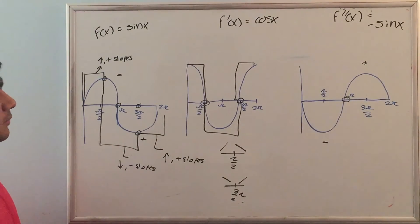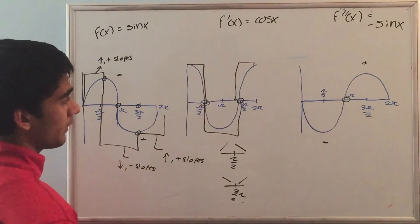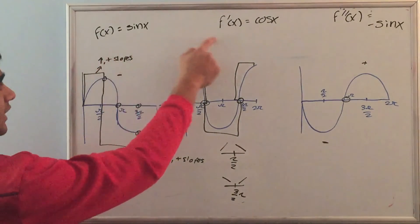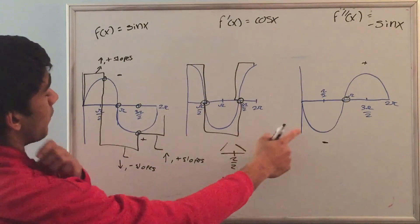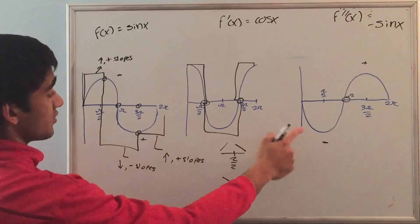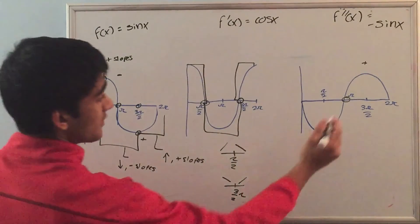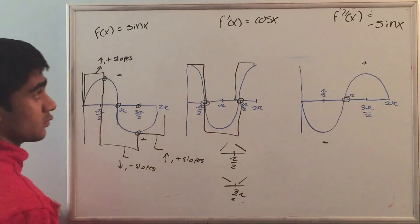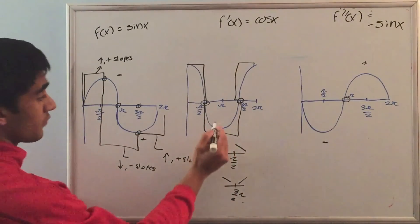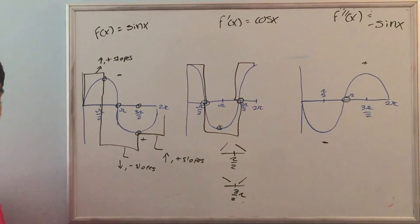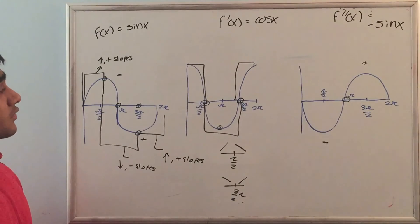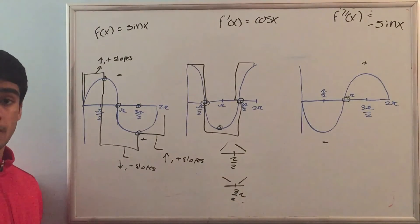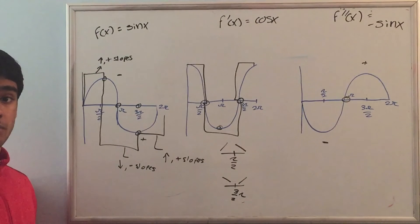The last relationship is between f prime x and f double prime x, and that's basically the same relationship between f of x and f prime x. Notice that when f double prime x equals 0, at that point there's either a min or a max. At pi, f double prime x equals 0, and at pi for the first derivative there is a minimum. So these are the relationships between the first derivative, the second derivative, and the original function. Thank you guys for watching, and please comment and subscribe below.